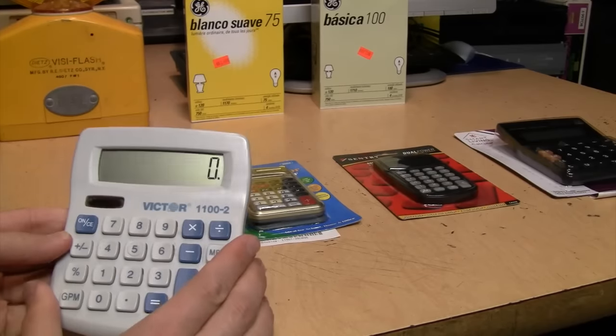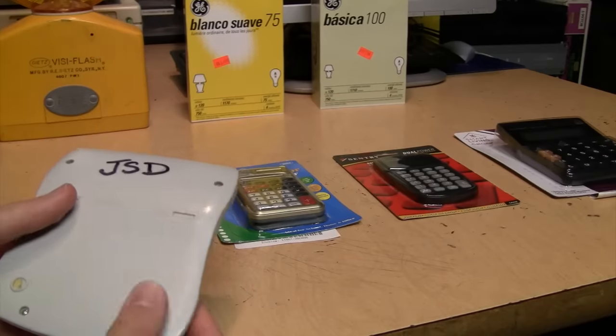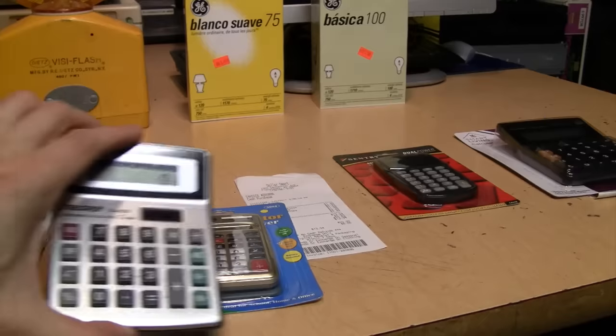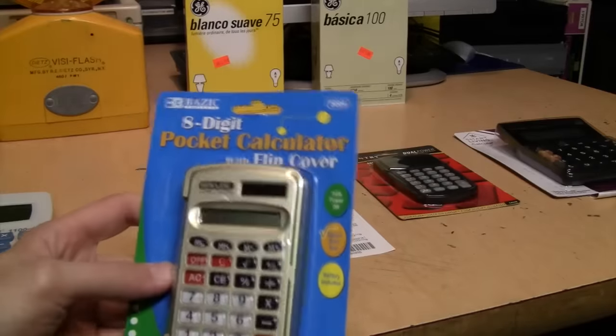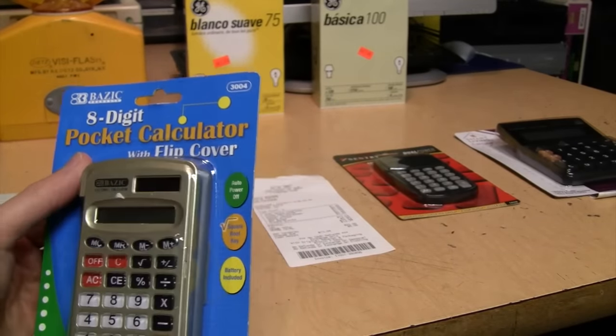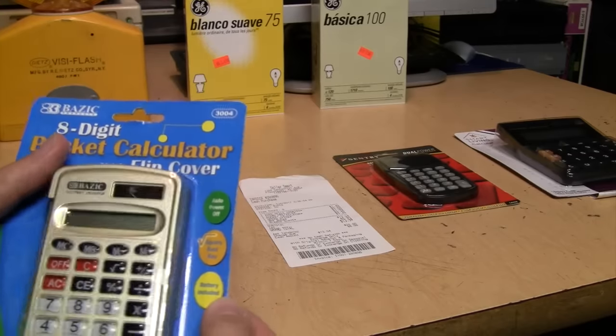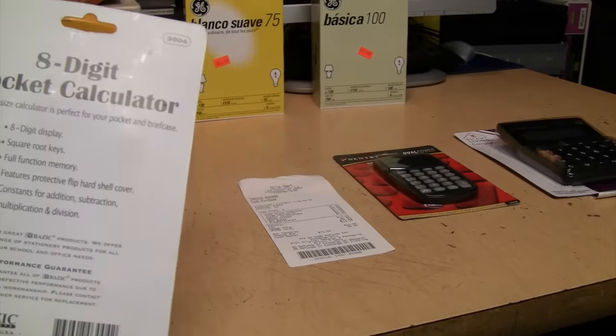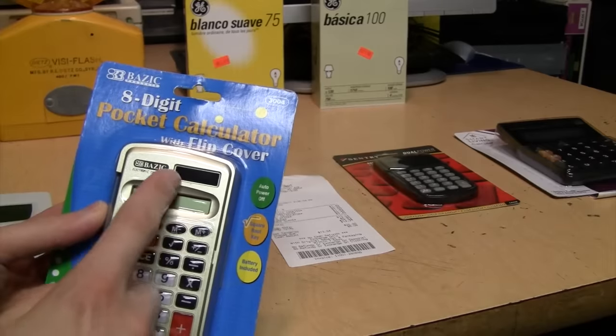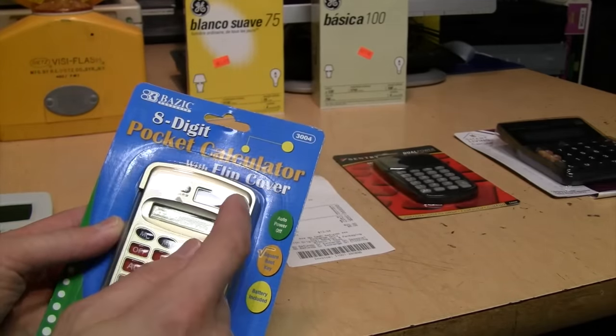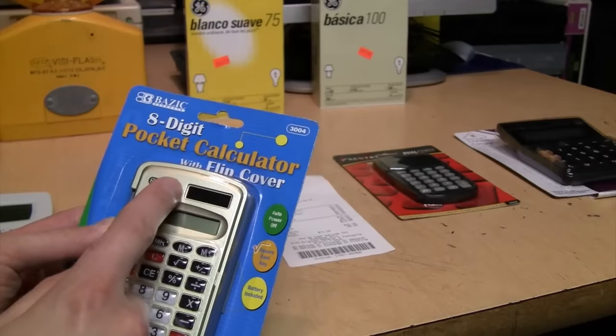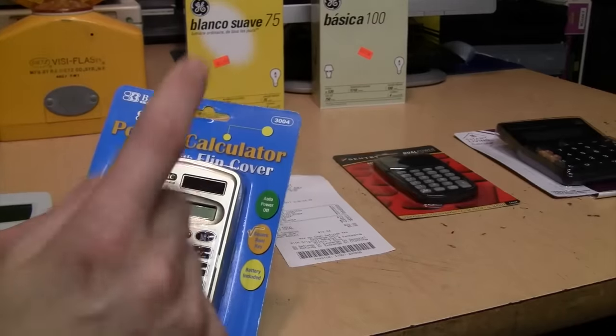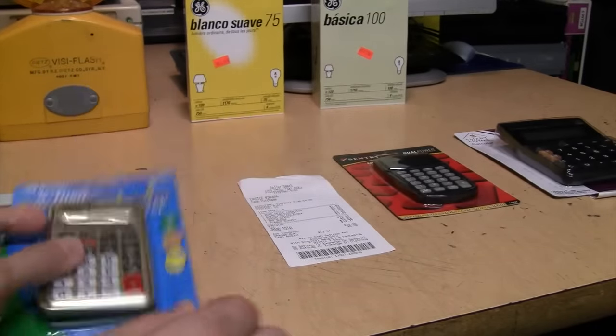I found this one at work, it's a Victor 1100-2, unknown date but probably from sometime in the 2000s. Then I went back to the same dollar store where I found this one. Well they don't sell these anymore, but they do sell this basic eight digit pocket calculator with flip cover. Says auto power off, square root key, battery included, ideal for school, home, and office, model 3004. On this entire packaging it doesn't mention anything about the solar cell. In fact, I saw a similar model on the shelf where instead of a solar cell it was just an indentation in the plastic case.